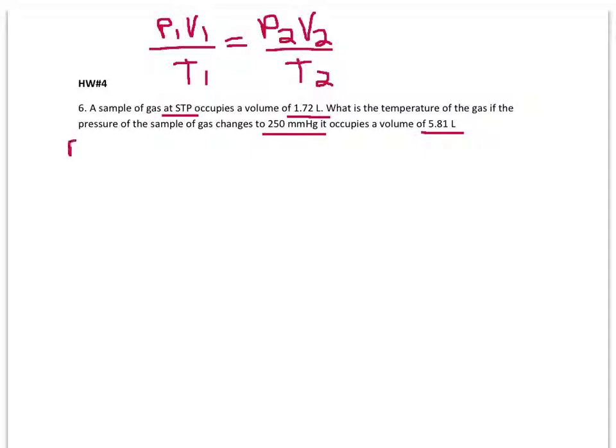So I'm going to write out all of my givens. My given pressure one, standard temperature and pressure. Remember, standard can be one of two numbers. It could be 1 atm or it could be 760 millimeters of mercury.